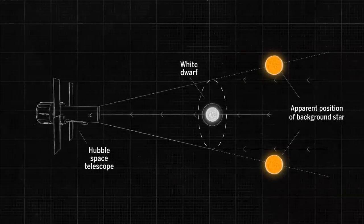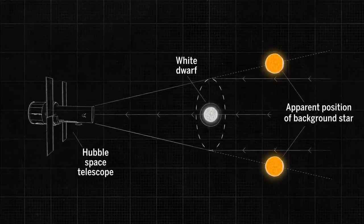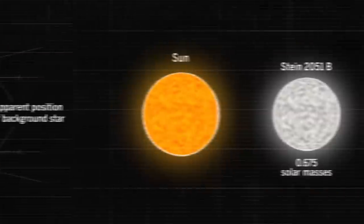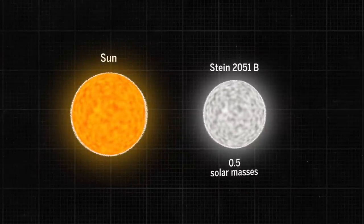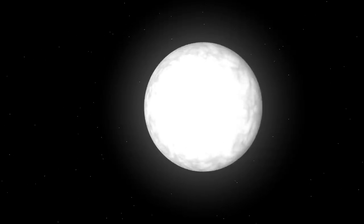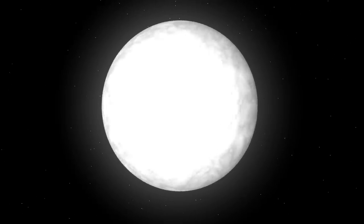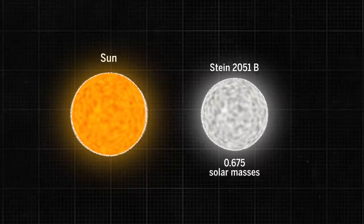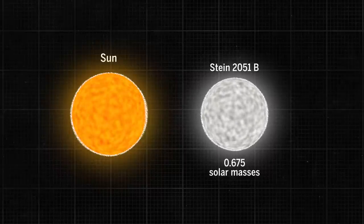As well as demonstrating the power of this new technique, the work also solved an enigma surrounding Stein 2051b. An earlier mass estimate had made it substantially lighter, too light for a white dwarf of that type, casting doubt on the theory of how such burnt-out stellar remnants form. But the new measurement puts Stein 2051b's mass exactly where it should be. With this one measurement,